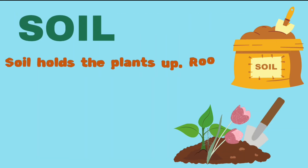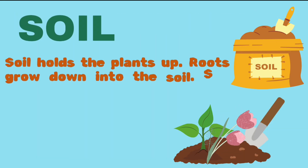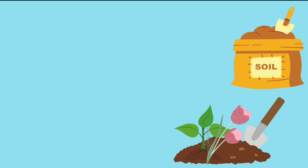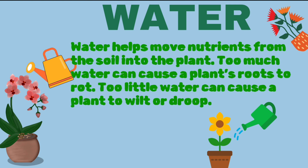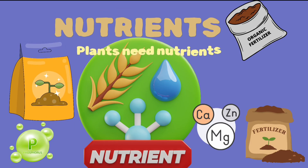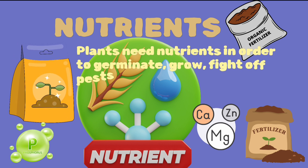Soil helps hold the plant up as roots grow down into it. Soil provides nutrients and water — soil itself is not really needed by plants, just the nutrients and water in it. Water helps move nutrients from the soil into the plant. Too much water can cause a plant's roots to rot; too little water can cause the plant to wilt or droop. Nutrients help plants germinate, grow, fight off pests, and reproduce.